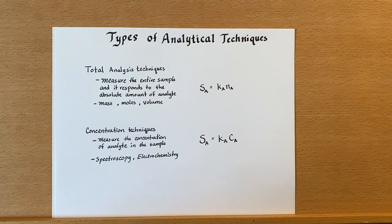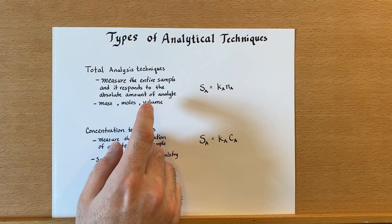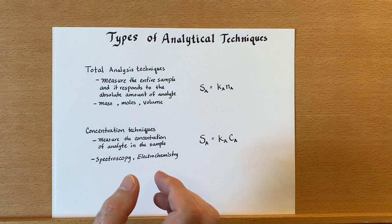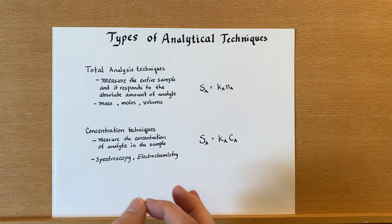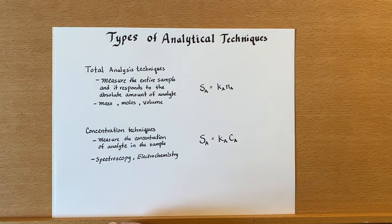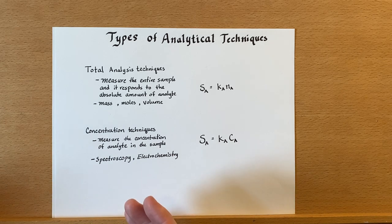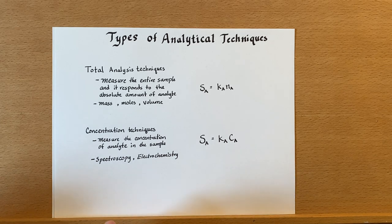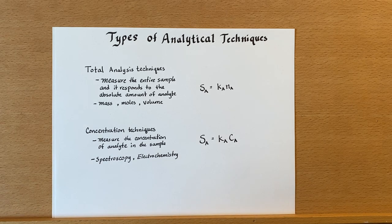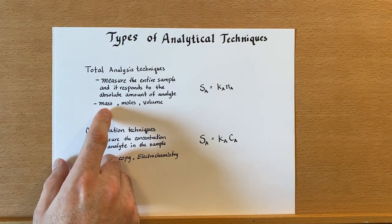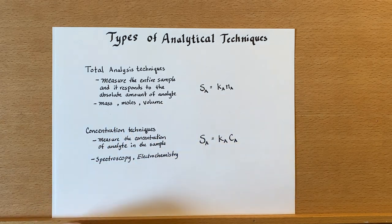This is something where we take the entire sample and measure it. This technique will respond to the absolute amount of analyte. Quantities that we would measure to determine the absolute quantity of the analyte would be mass, or the number of moles, or the volume of something.